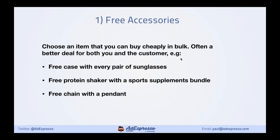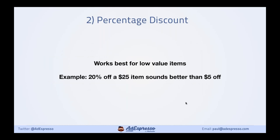Classic examples of free accessories: if you're a sunglasses retailer, give a free case — maybe $15 retail value, a couple of bucks when you buy in bulk. Sports supplements always offer free protein shakers. If you're doing jewelry, you can buy chains in bulk and offer them with a pendant. You can apply it to any type of business — if you're selling shoes, it's a shoe shine kit; if you're selling dresses, it could be a belt. You can find something that's a good deal for you and the customer.